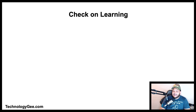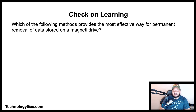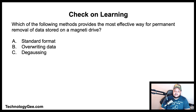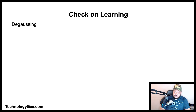Check on learning — question one: Which of the following methods provides the most effective way for permanent removal of data stored on a magnetic drive? Is it standard format, overwriting data, degaussing, or low-level format? The correct answer is degaussing, which is the most effective method.